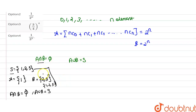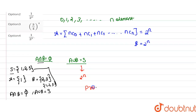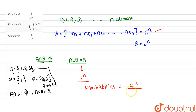This is a perfect example for the given question where A intersection B is phi and A union B equals S. Now, A union B equals S means the favorable outcomes equal 2 power n. The required probability equals favorable outcomes, which is 2 power n, divided by the total outcomes, which is 2 power n into 2 power n.